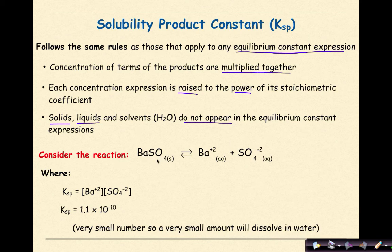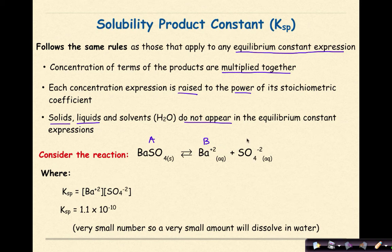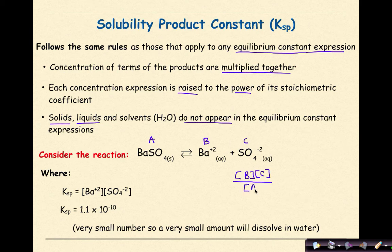Let's look at the reaction: BaSO4 as a solid, reversible arrow, Ba²⁺ ions in water and SO4²⁻ ions in water. When we write an equilibrium expression, we consider BaSO4 as A, Ba²⁺ as B, and SO4²⁻ as C. For a general equilibrium expression, we write products over reactants: concentration of B times concentration of C, all over concentration of A.